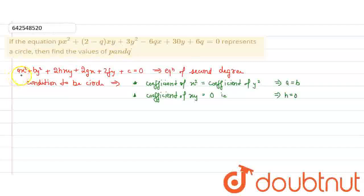I have already written the general equation of a second degree curve. If we want this general equation to represent a circle, then there are two conditions.